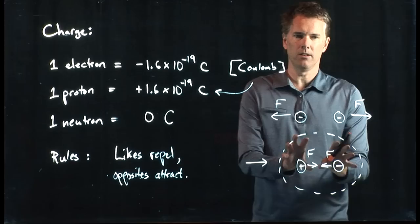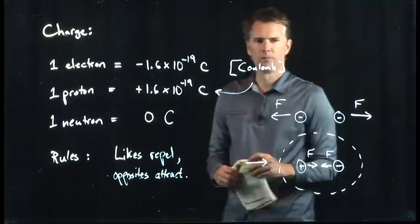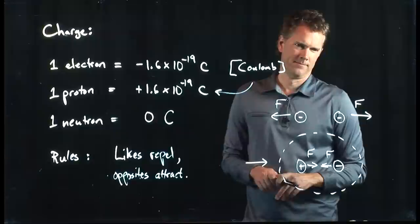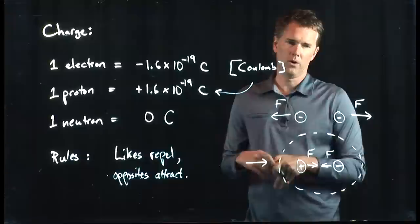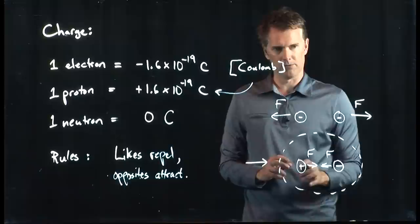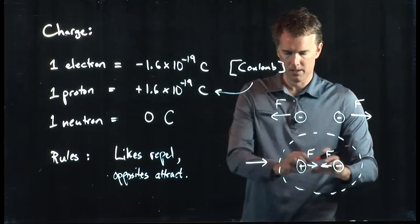This configuration — a positive charge and a negative charge right next to each other — might look familiar. Where might you find a positive charge and a negative charge right next to each other? An atom. Exactly. This is an atom right here. Let's talk about atoms.